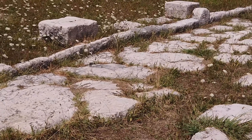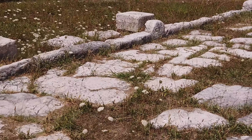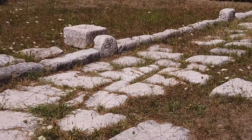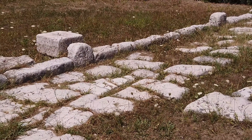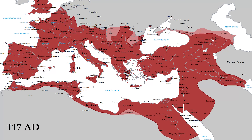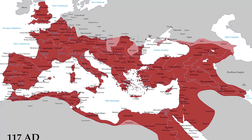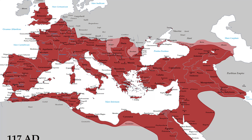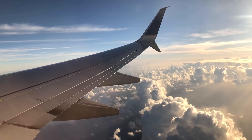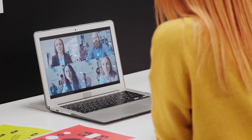But why is that? Well, the larger an empire grows, the further apart all the regions of that empire logically then are. At its greatest extent, the Roman Empire covered an area of 5.5 million square kilometers, which is smaller than today's United States land area. But we have to think in the context of the times.